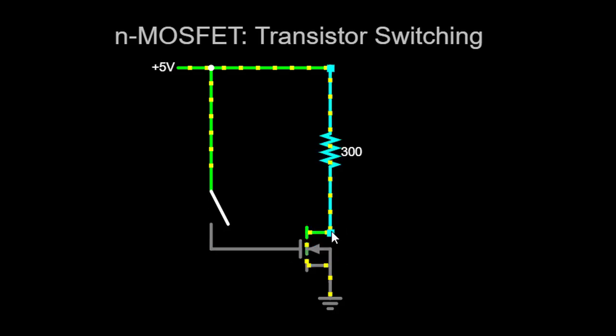Moving on, the drain (D) of the N-MOSFET is connected to a 300-ohm resistor. The other terminal of the resistor is connected to another plus 5V voltage source. The drain terminal is where the current enters the transistor.